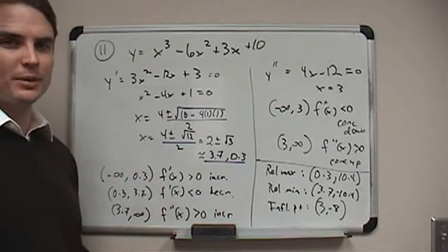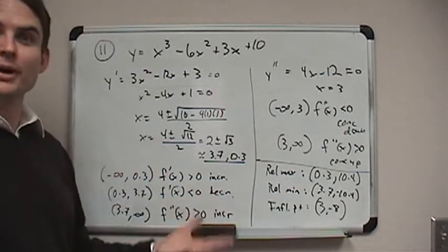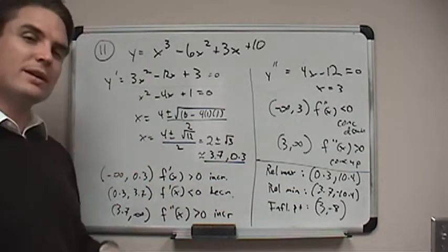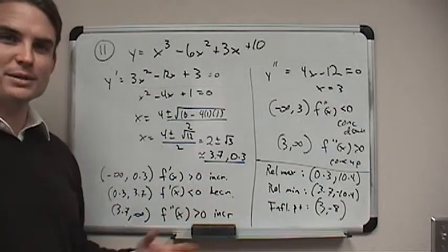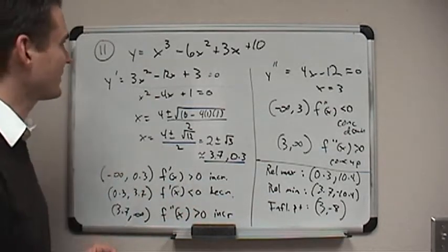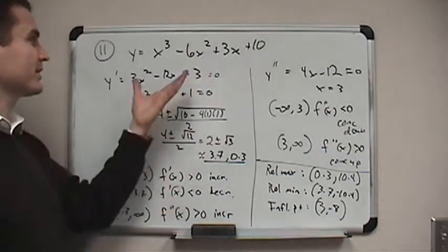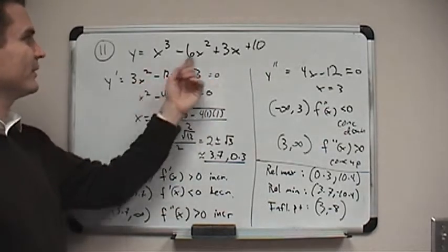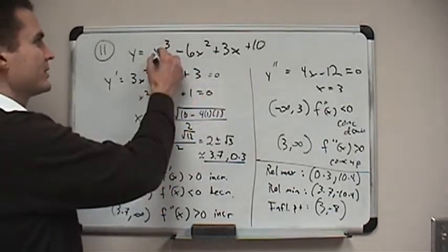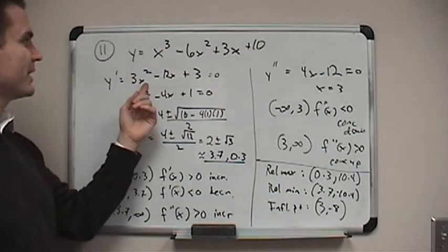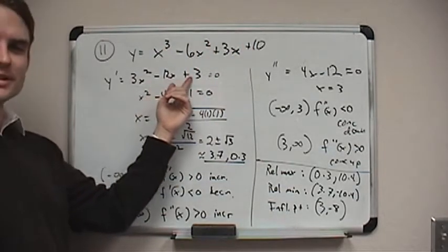But the function they give us is y equals x cubed minus 6x squared plus 3x plus 10. And the directions say sketch the graph of the function, choose a scale that allows all relative extrema and points of inflection to be identified on the graph. So it's implied that they want you to find those things first. Well, again, it's a little bit of work, but all the tools, I mean, we have at this point. So where's the function increasing and decreasing and where are the relative maximums and minimums? Let's start with that. So to figure that out, we first look at the derivative of the function. So this is my function, y equals x cubed, etc., etc. Well, the derivative is 3x squared minus 12x plus 3.